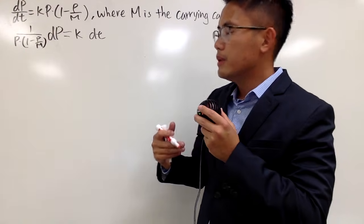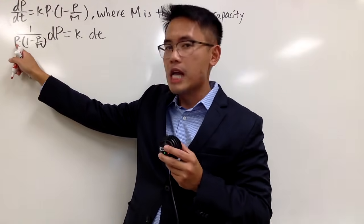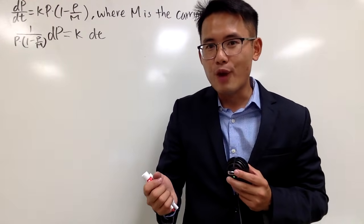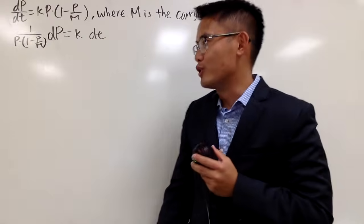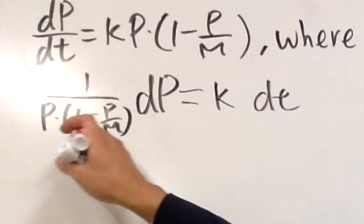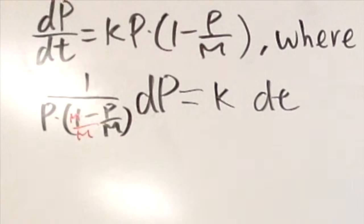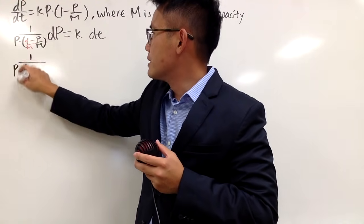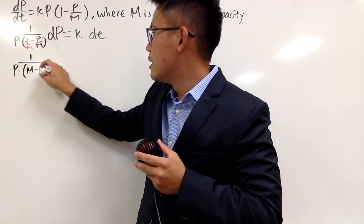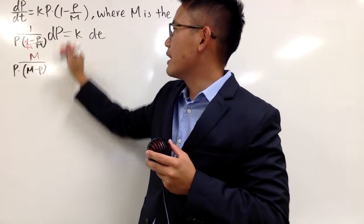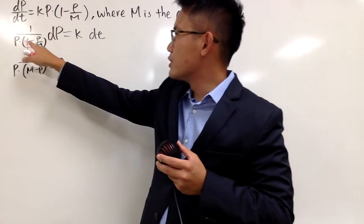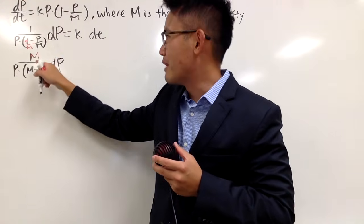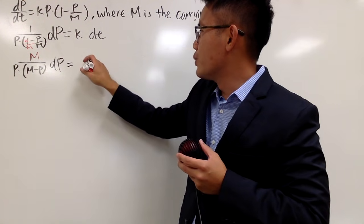We shall try to integrate both sides, but in the p world, in the denominator we have p times 1 minus P over M. We have to do some partial fraction, but this is a complex fraction, so let's change it a little bit. Let me multiply by M and M to combine the fractions. So we're pretty much having 1 over p times M minus P, and then this is over M — let me put the M on top, and we have dp. So you multiply by M and M, bring the M up, and this equals k dt.